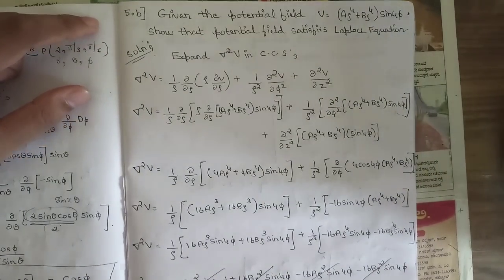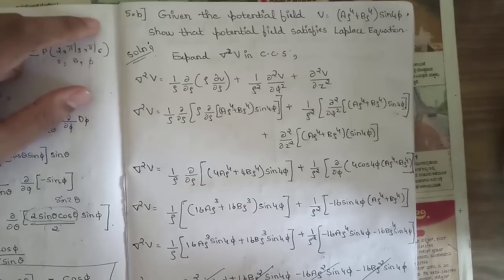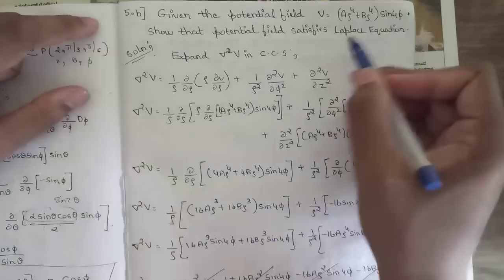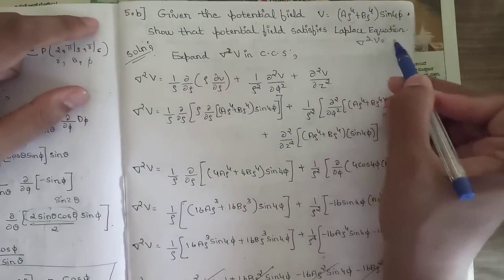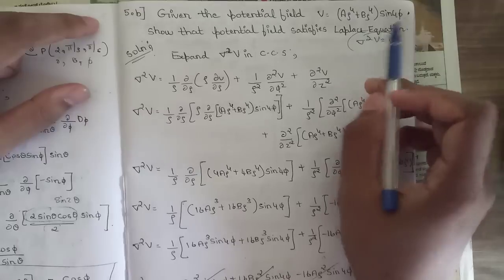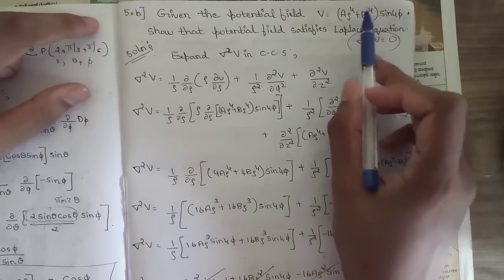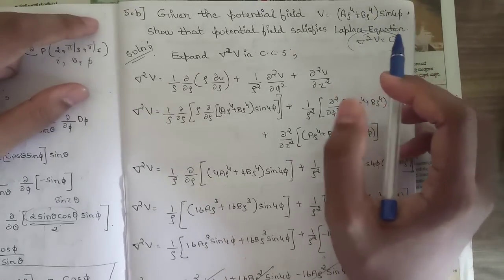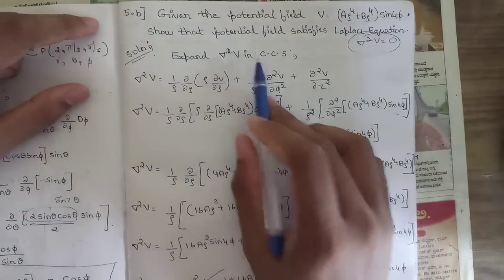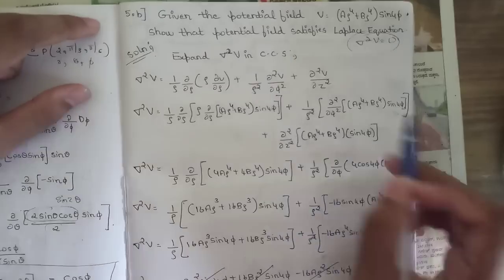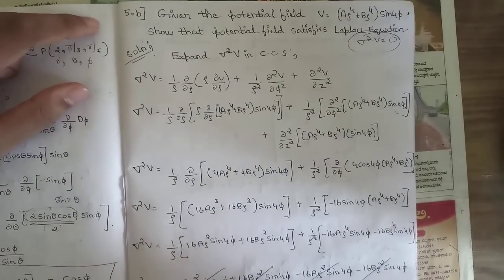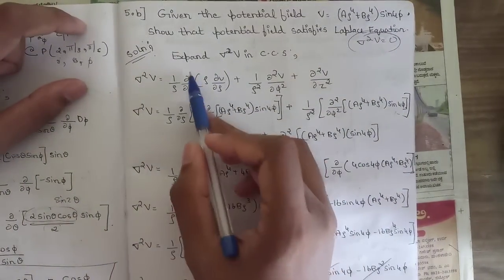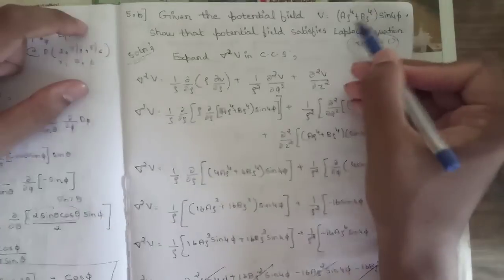This is a tricky question yet very easy to solve. We know that the general Laplace equation is ∇²V = 0. We need to solve this such that we get ∇²V = 0. Since rho and phi are mentioned, we use the cylindrical coordinate system.